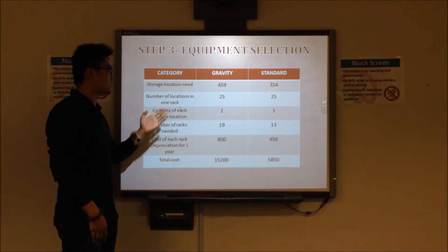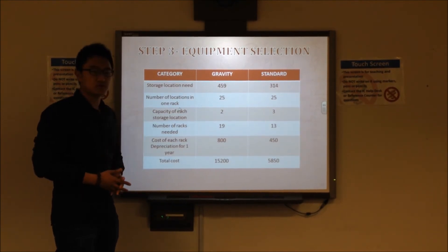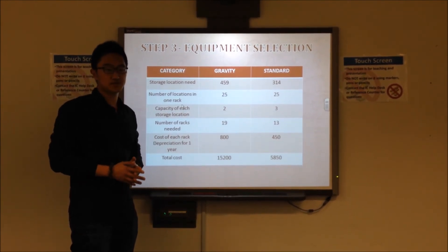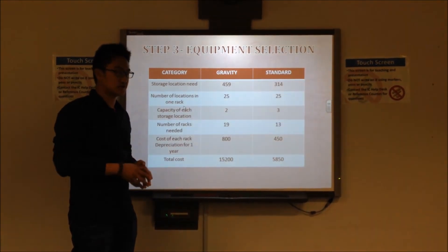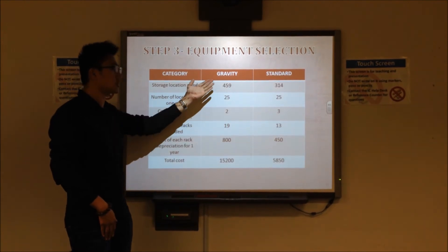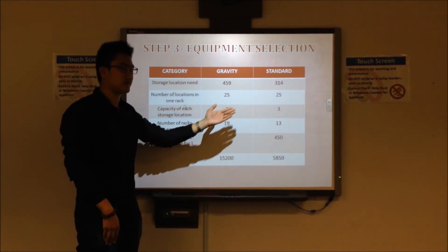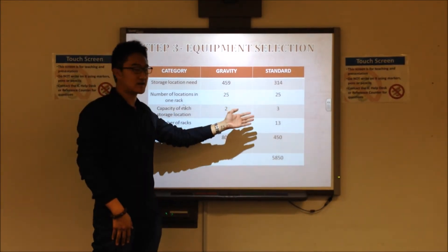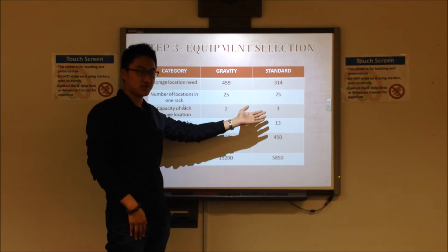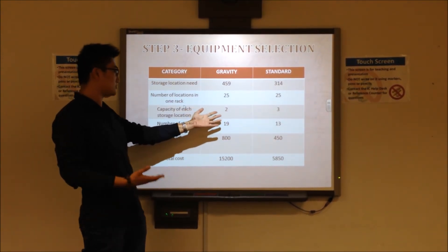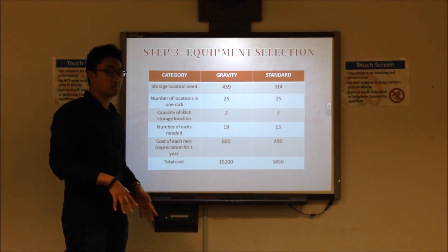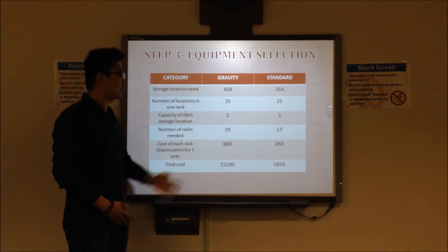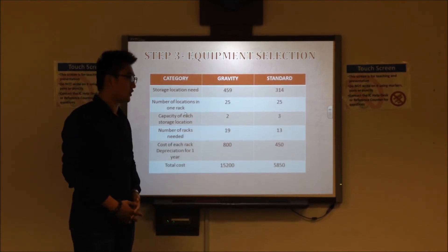And for the numbers of locations in one rack, we need to care about this part because in the fast-packing area, we cannot share the location with two products. If there is a vacancy in one location, we cannot put another product in this location. The location in one rack, for gravity rack it's 25, and for standard rack it's 35. And next thing is the capacity of these storage locations. The standard rack can save a lot of space, so it has 3 cubic feet to store all the products. But for the gravity rack, we only have 2 cubic feet to allocate all the products. And then, we can calculate the number of the racks we need. For the gravity rack, we need 19 of them. But if we choose the other racks, we only need 13 of them.